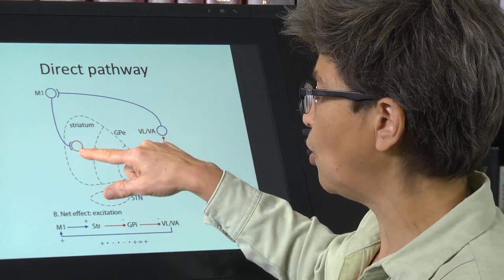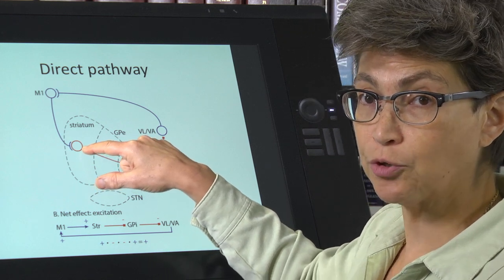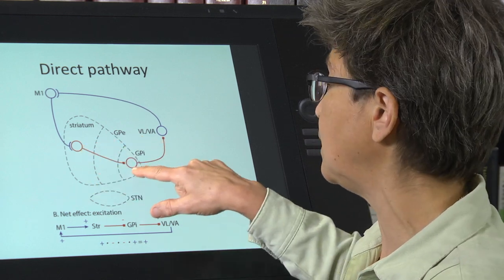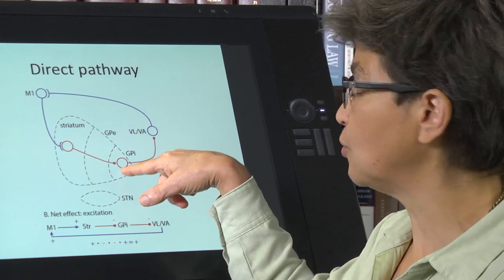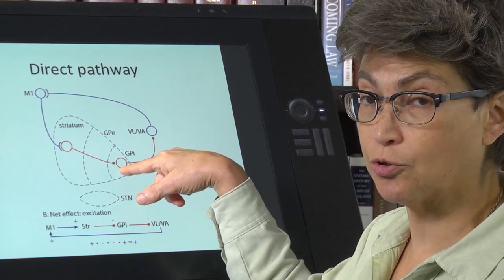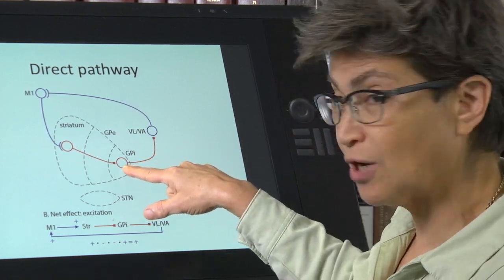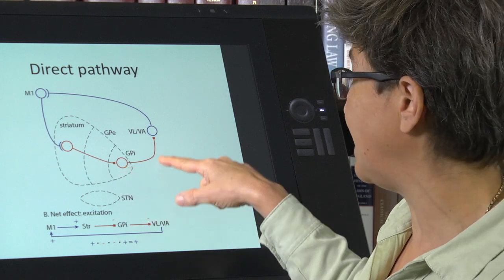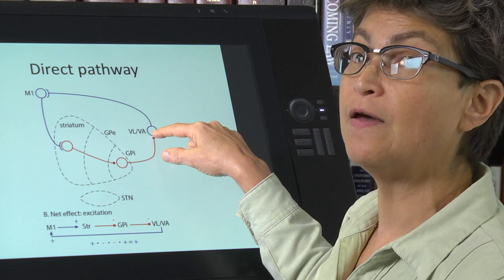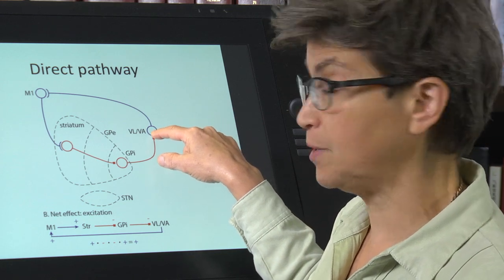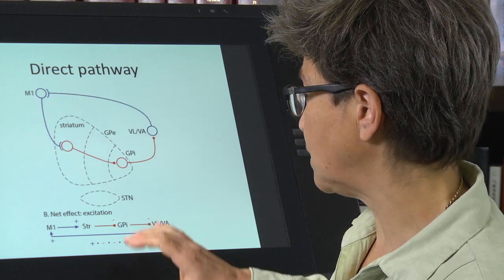In the striatum are medium spiny neurons — GABAergic medium spiny neurons — that are going to inhibit the output neurons, the neurons of the globus pallidus internal, the medial or internal globus pallidus. These neurons are also GABAergic and they also inhibit their target cells, which in this case is the VA/VL thalamus. That information then gets sent back to motor cortex.